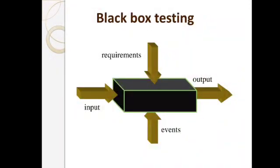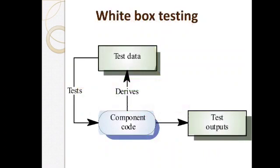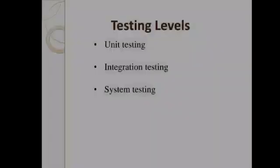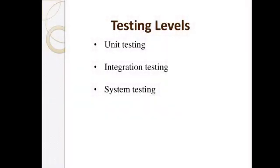The image shows the block diagram of black box testing — it takes requirements and events, an input is given, and an output is produced. In white box testing, when an input is given, common code derives test data, and that test data is fed back into the common code, checked multiple times, and test outputs are produced.